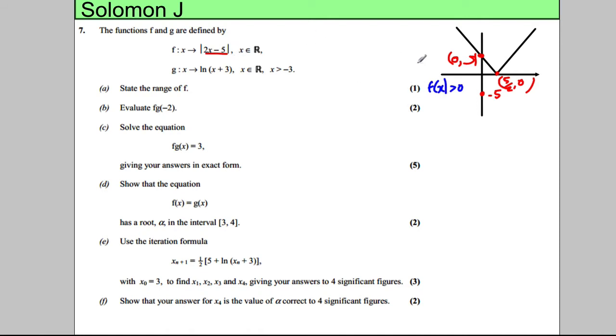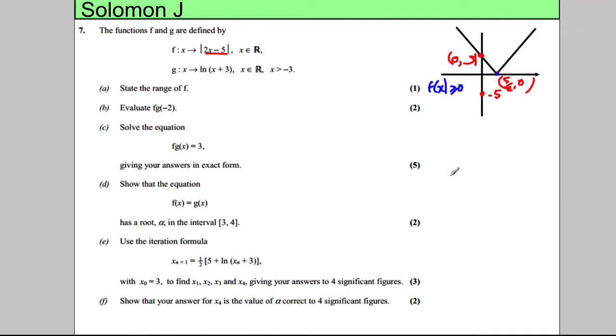Clearly the range of this graph is F(x) ≥ 0. You should be recognising that — it's only one mark. A slight mistake: it should be bigger than or equal to zero, since obviously it can equal zero at that point.